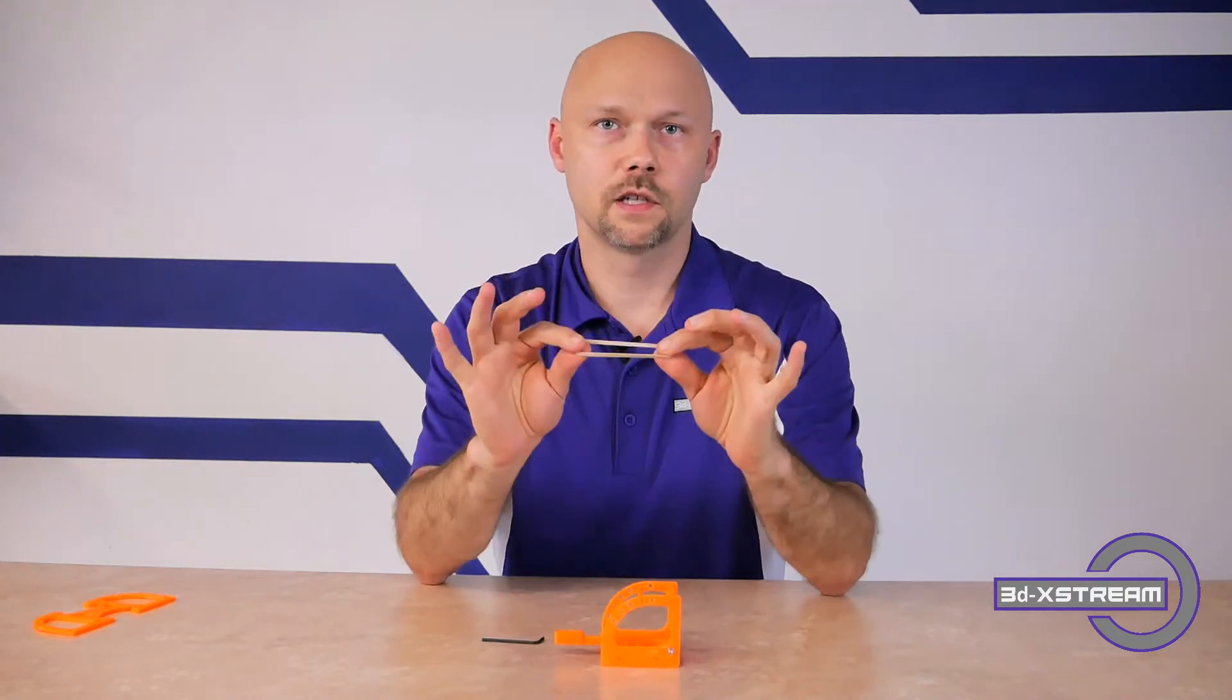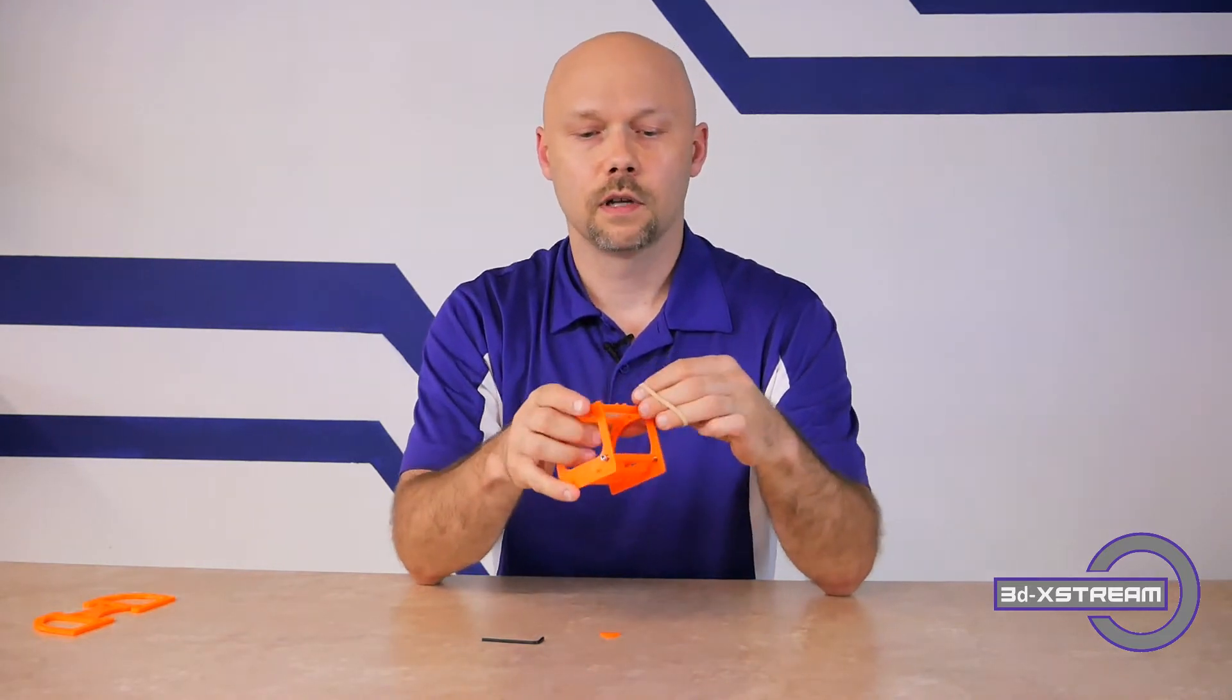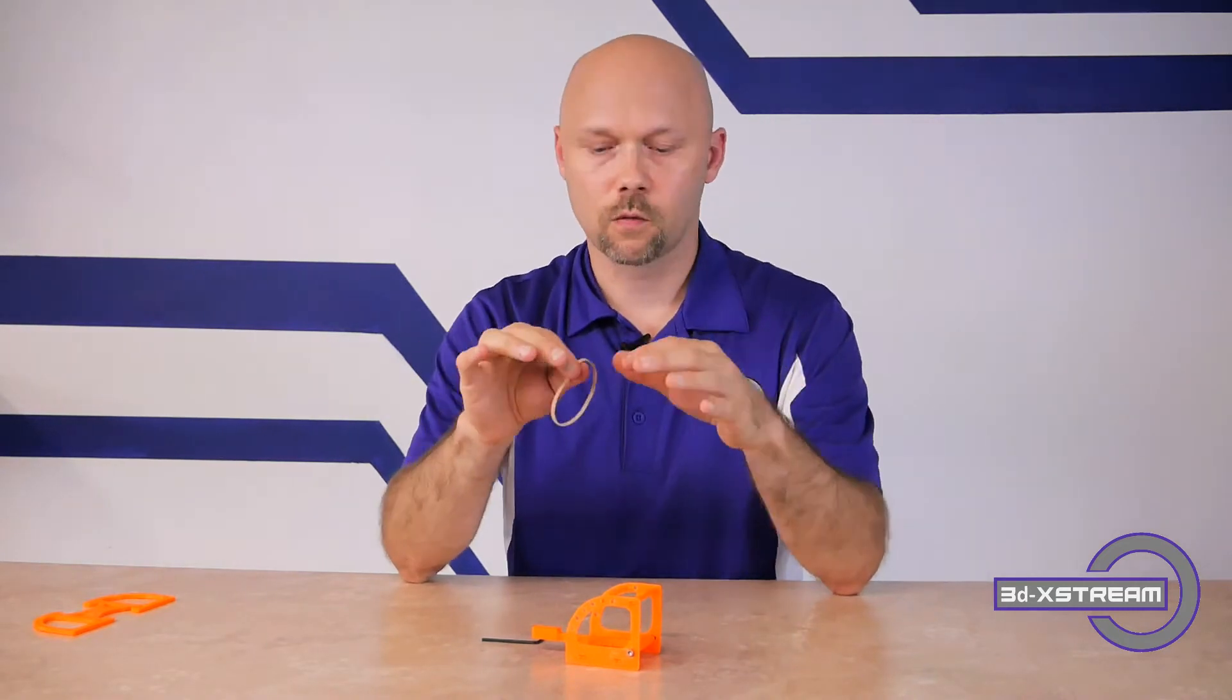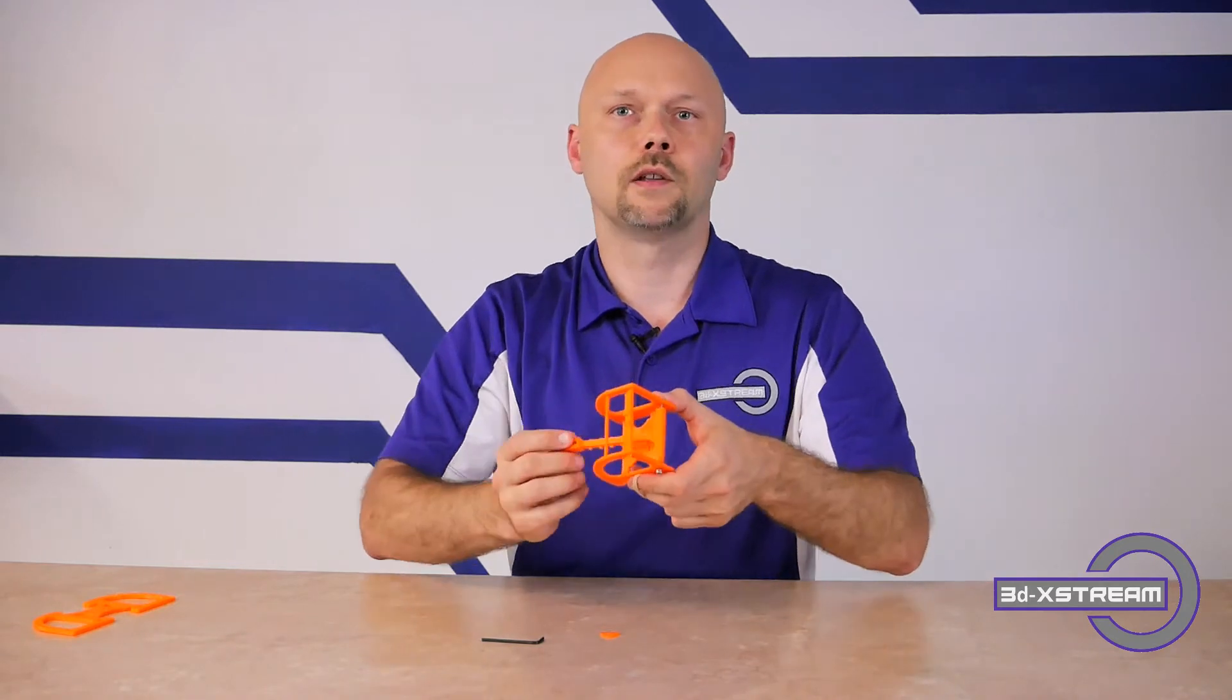The last thing you're going to need is the rubber band. This is going to cause the tension to be on the catapult to launch the objects. Now here's a little trick. You can do this multiple ways. There's no right or wrong way to do this catapult as long as it provides tension on the throwing arm and launches the object. So figure out what works best for you.